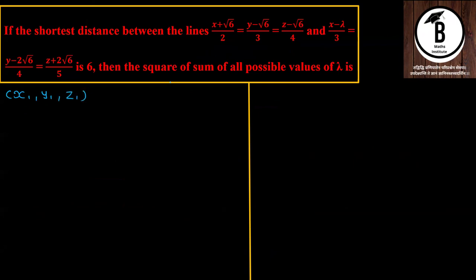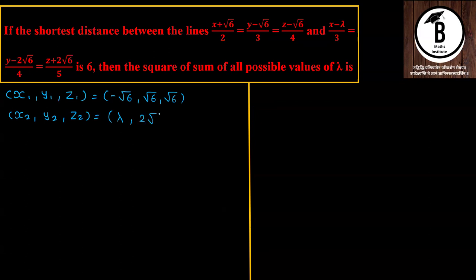From the first line, since we have x plus, that means x₁ = −√6, y₁ = √6, z₁ = √6. Similarly for the second line, x₂ = λ (which we need to find), y₂ = 2√6, and z₂ = −2√6.